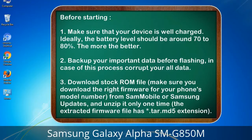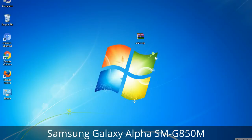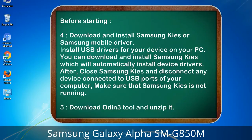3. Download the stock ROM file. Make sure you download the right firmware for your phone's model number from Sammobile or Samsung updates, and unzip it only one time. The extracted firmware file has a *.tar.md5 extension.